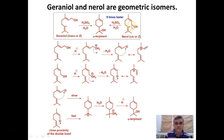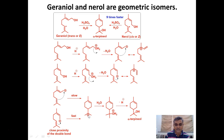In the mechanism, both geraniol and nerol are first protonated. The protonated OH is a very good leaving group, generating a carbocation. This carbocation is trapped by the trisubstituted double bond to give cyclization and a tertiary carbocation. In nerol this cyclization is fast because the reacting groups are close together, whereas in geraniol they are far apart making it slow. The tertiary carbocation is then trapped by a water molecule and we get alpha-terpineol. In this way we see that nerol, as the cis isomer, undergoes cyclization nine times faster than geraniol.